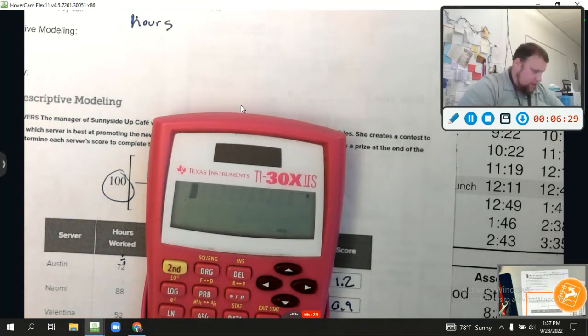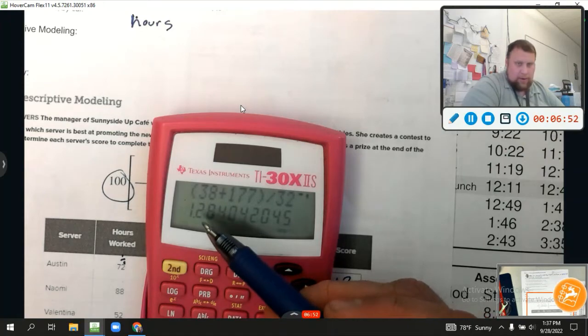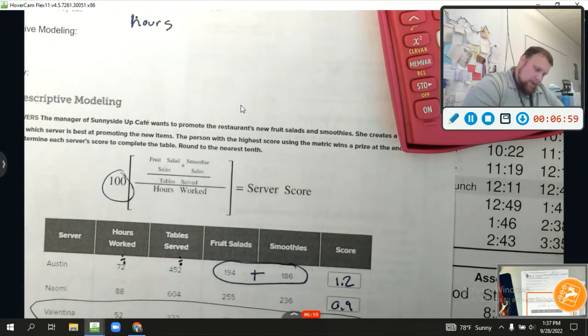Now, after we model the situation, we've got to ask ourselves, did the model really do the job? So yes, what did this take into account? It took into account how much they sold versus how many tables they served versus how many hours they worked, right? Because if they worked a lot of hours, then it's going to make it a smaller number. If they worked a lot of tables, of course they're going to sell more, right? More hours, more tables means I sell more. That makes sense. So we've got to account for that.